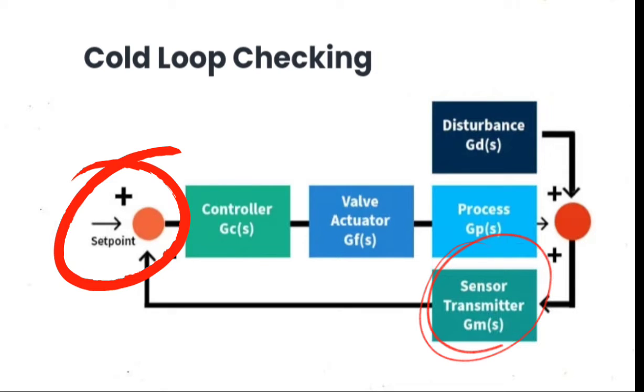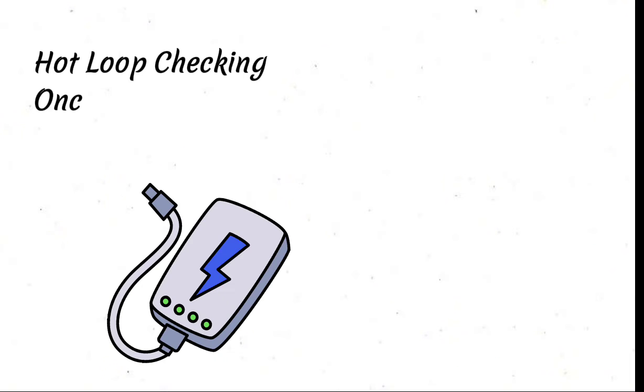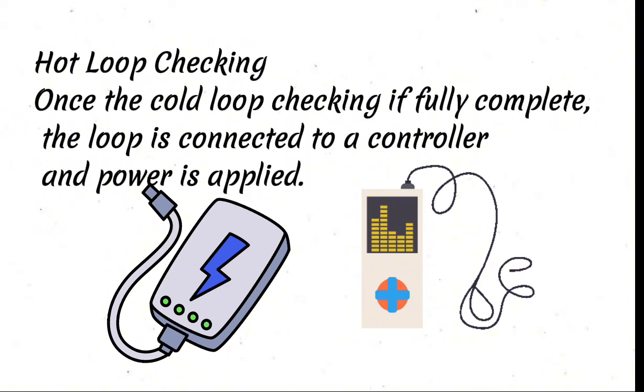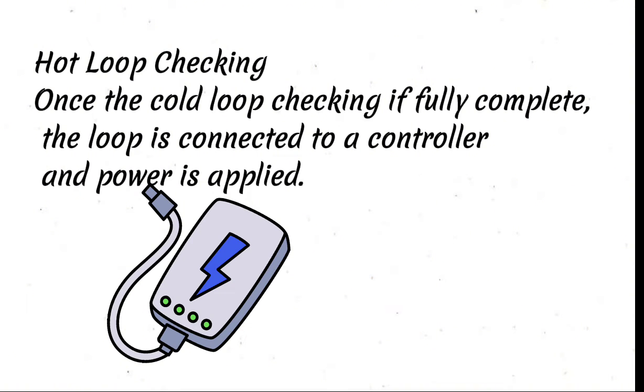Continuity is tested for each of the branch cables to verify the continuity between the controllers. Hot loop checking is performed once cold loop checking is fully complete. The loop is connected to a controller and power is applied.